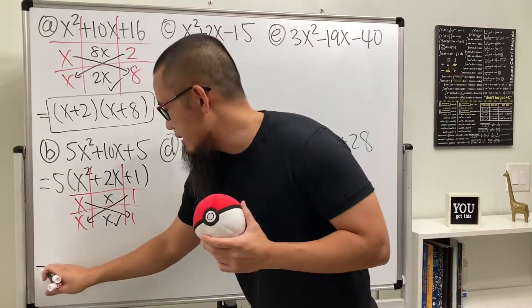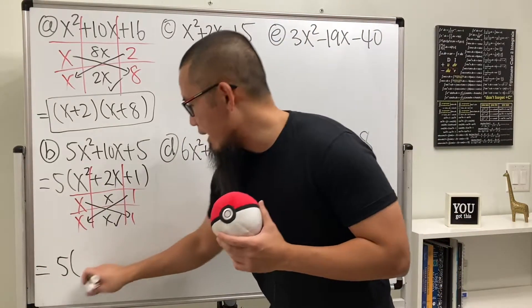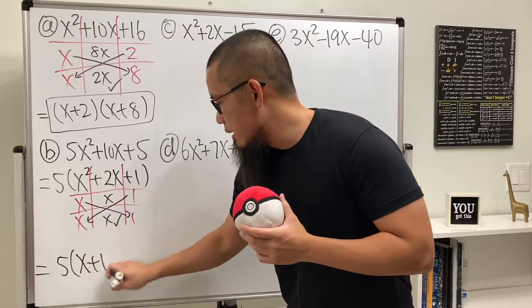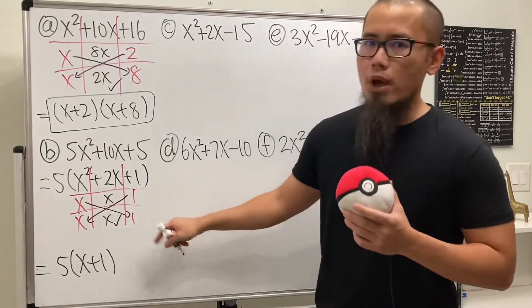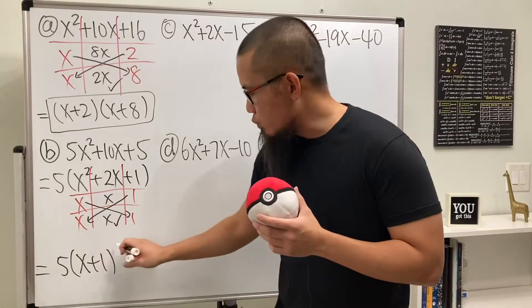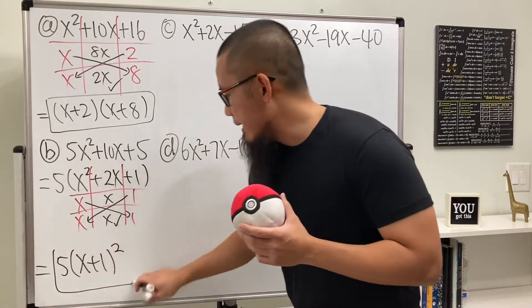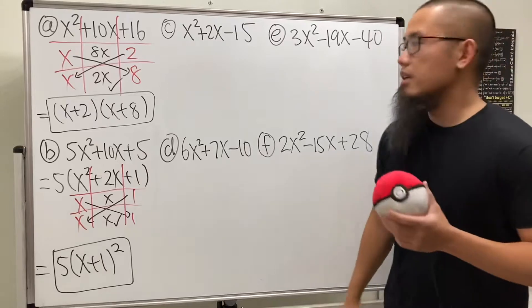So here is the answer. 5 all the way in the front, and then x plus 1 times another x plus 1. So let's just write x plus 1 to the second power. And then we are done.